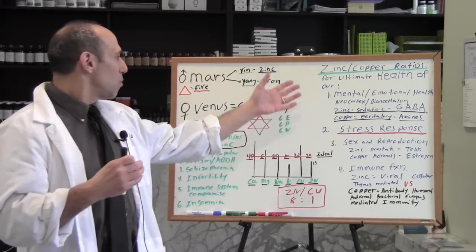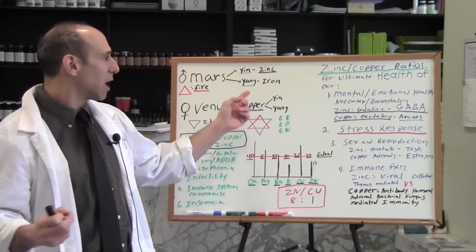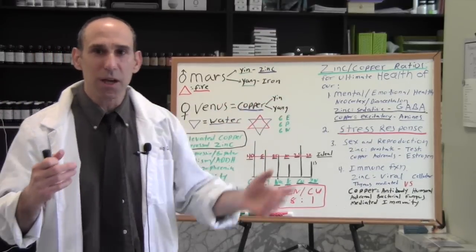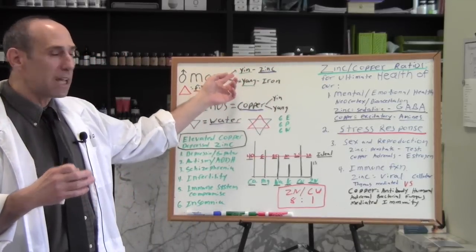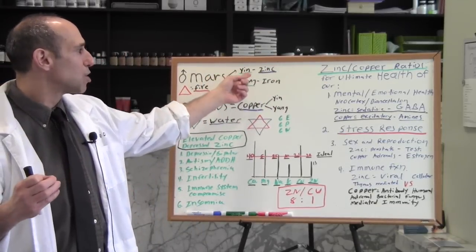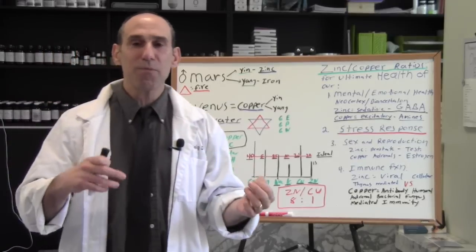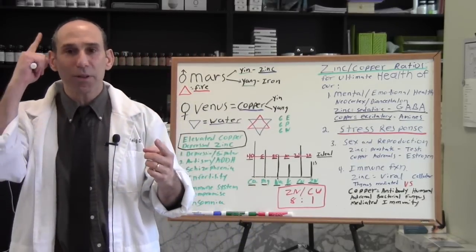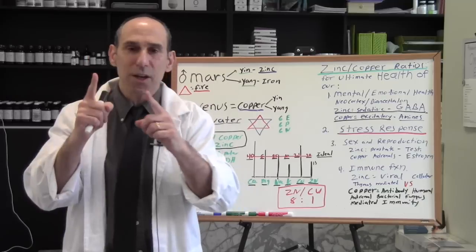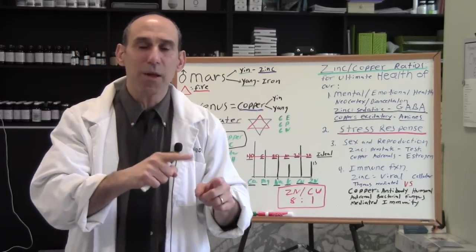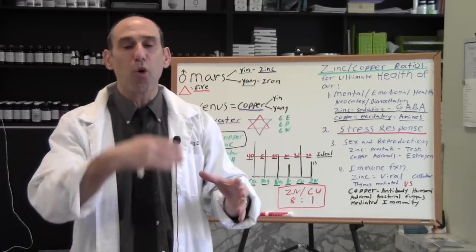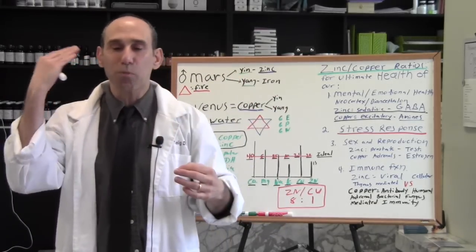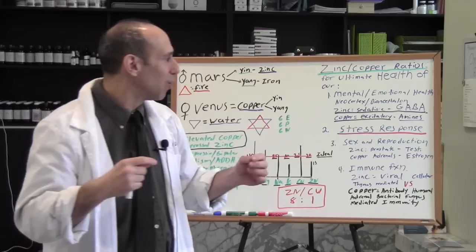And we need that Mars yang type of iron energy. But the higher octave of Mars is the more yin energies, which has to do with zinc. The crowning achievement of mankind is the development of the neocortex. The neocortex does not develop unless it has zinc. Zinc is responsible for the higher brain functions of our neocortex.